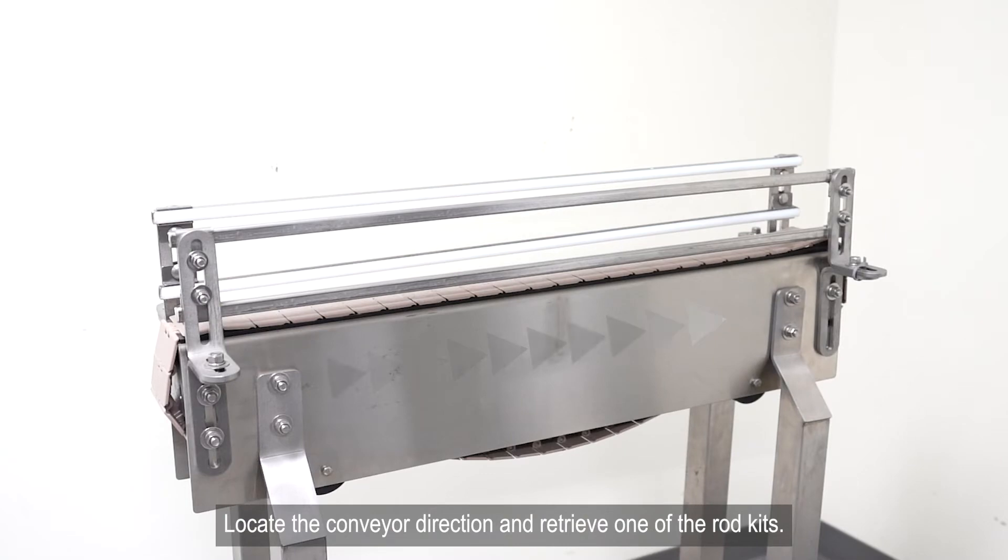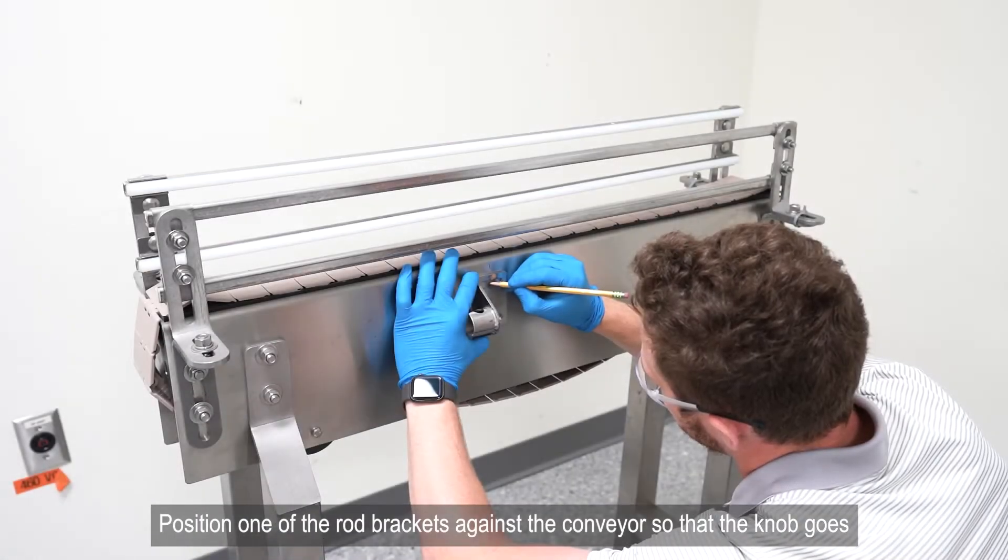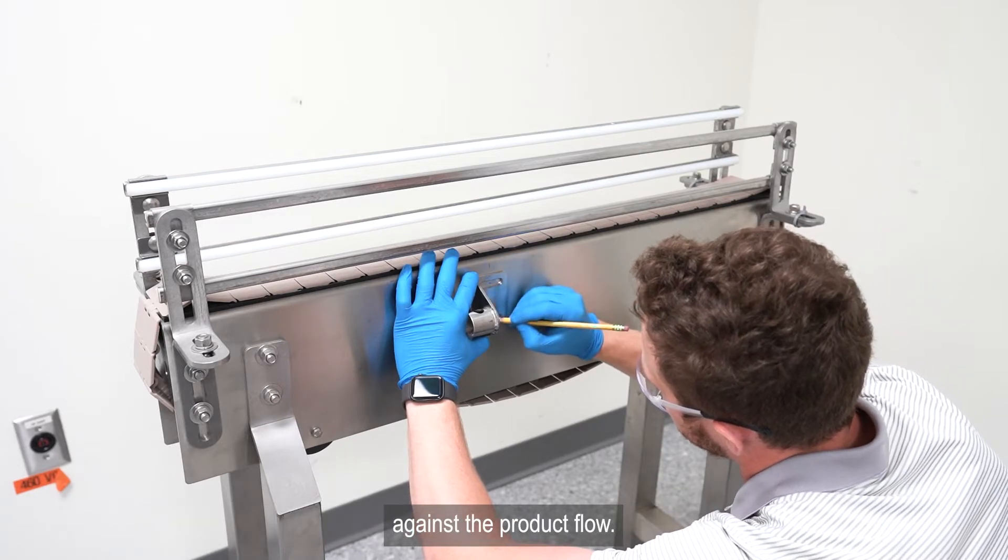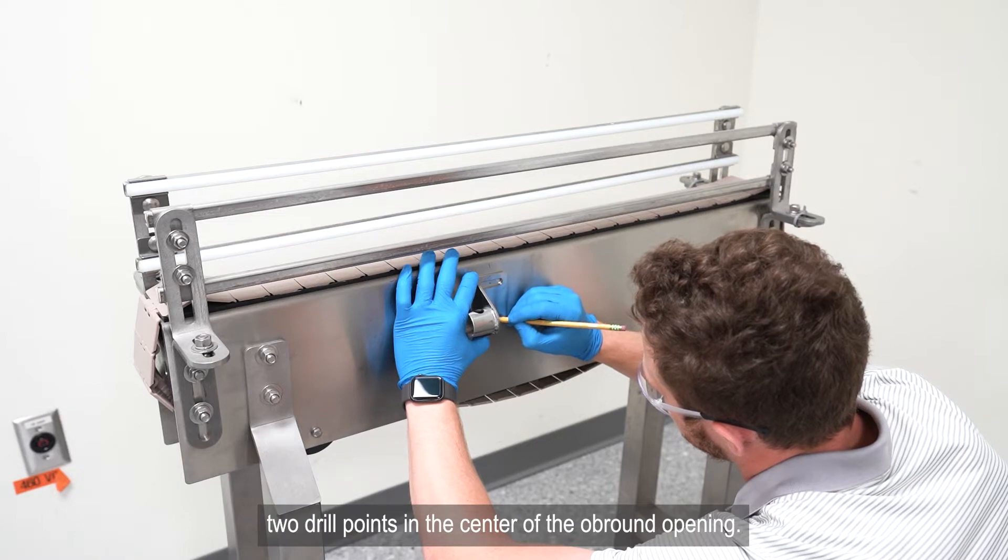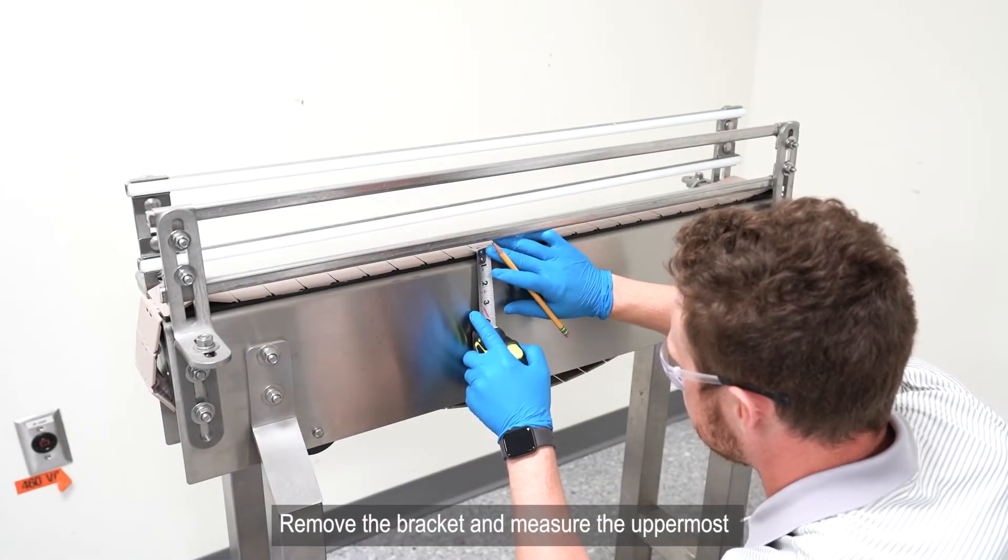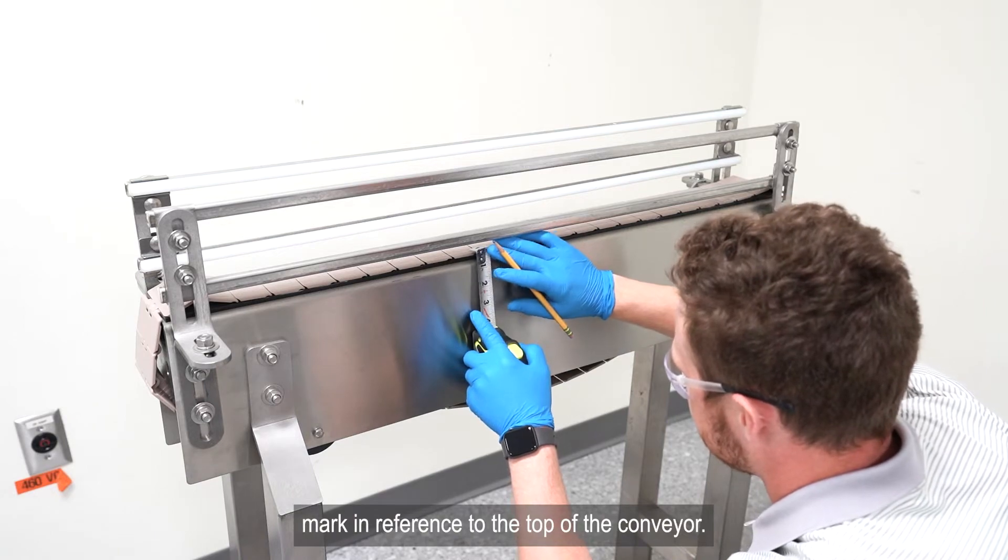Locate the conveyor direction and retrieve one of the rod kits. Position one of the rod brackets against the conveyor so that the knob goes against the product flow. Level the bracket and mark two drill points in the center of the ob-round opening. Remove the bracket and measure the uppermost mark in reference to the top of the conveyor.